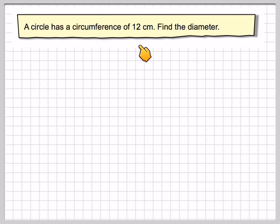This circle has a circumference of 12 centimetres. Find the diameter. So C is equal to pi times D.